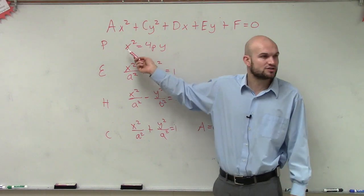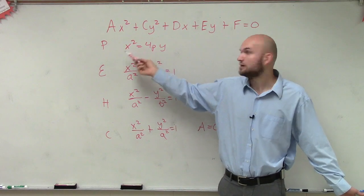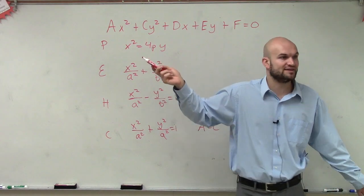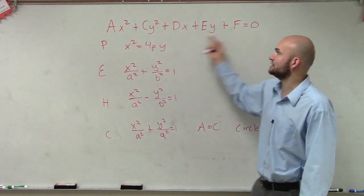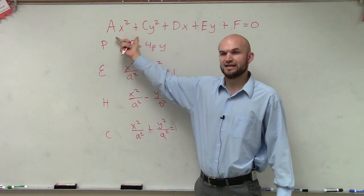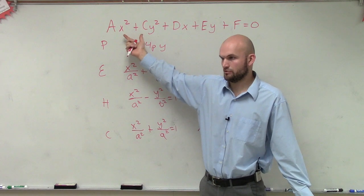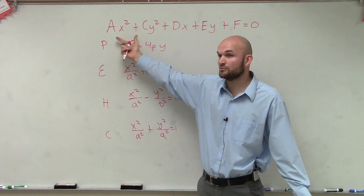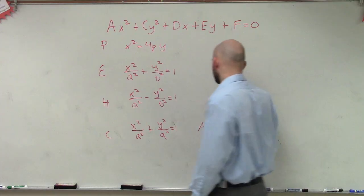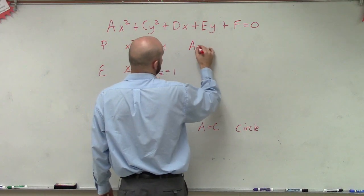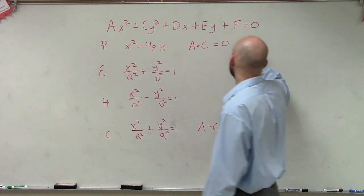On a parabola, we only have one squared term — it's either x squared or y squared. In this case we have an x squared, so I would have a 0 as the coefficient of y squared. If I gave you a formula in this format, a or c — one of them would have to be 0. Only one of them has to be 0 because there's only one x squared or one y squared. So if you were to multiply a times c and you got 0, then you know you have a parabola.